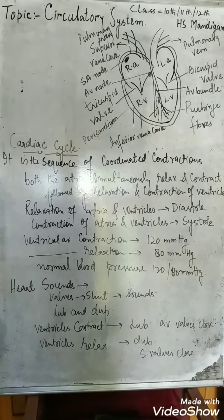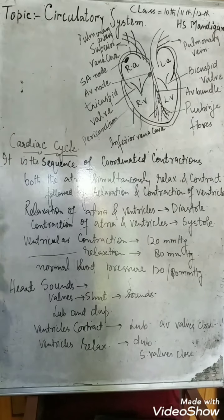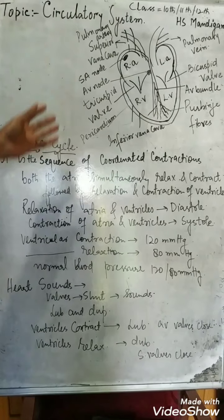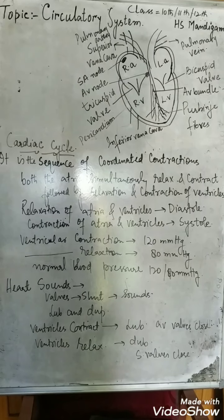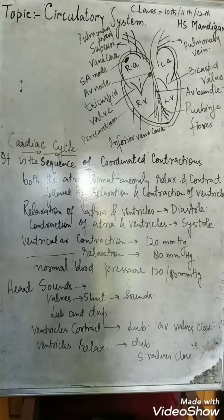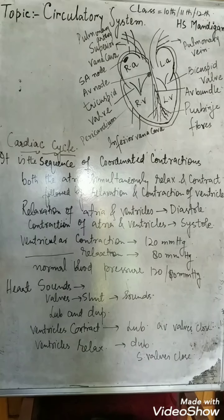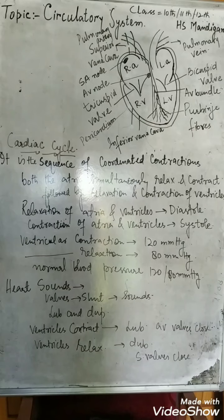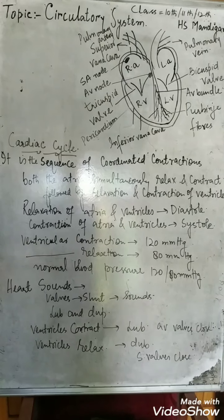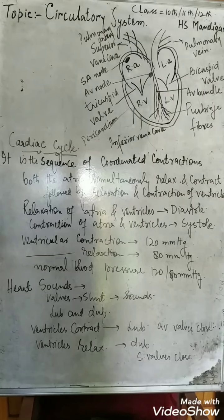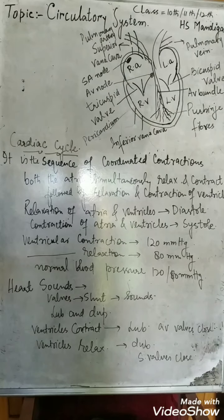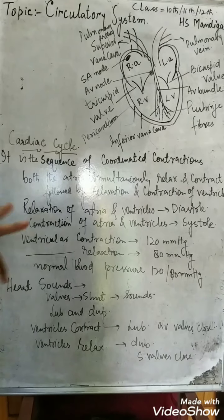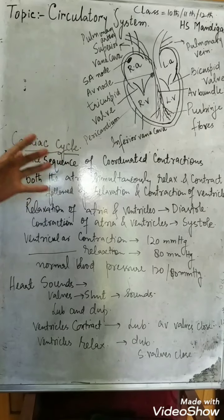Now, about heart sounds. Our heart produces sounds when the valves close. There are two sets of valves in our heart, and the sounds they produce when shut are identified by an instrument called a stethoscope — commonly seen around the necks of doctors. There are two types of sounds that can be identified: the lub sound and the dub sound.